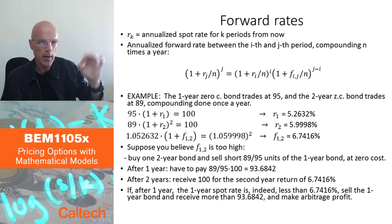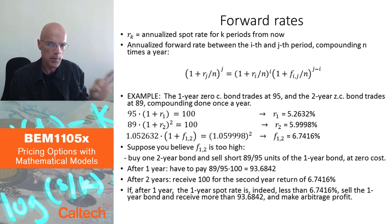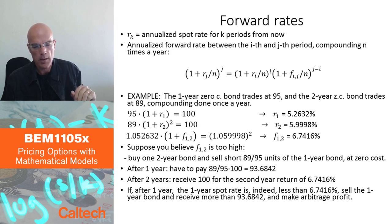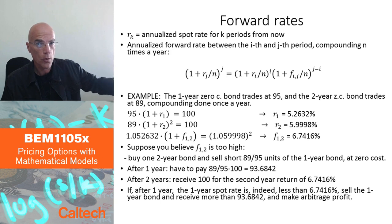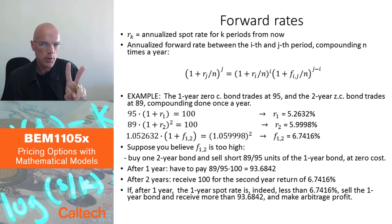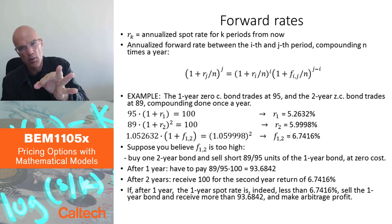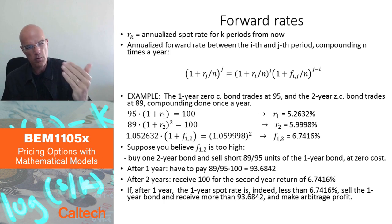By trading different bonds with different maturities today, I can create a portfolio which invests $1 maybe one year from now and then pays something known two years from now. The rate which corresponds to the increase of that $1 from one year from now to two years from now is called the forward rate.